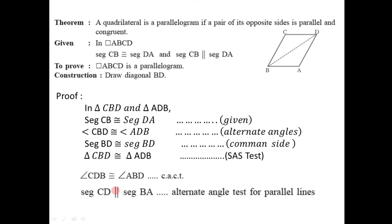As we can see, if we consider side CD and side BA with BD as the transversal, then these two angles are alternate angles. We have proved that these two angles are congruent. Therefore, by the alternate angle test for parallel lines, side CD is parallel to side BA.